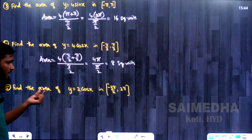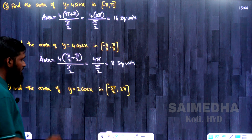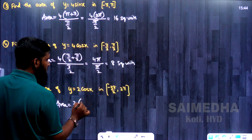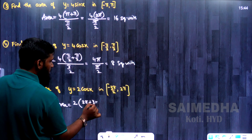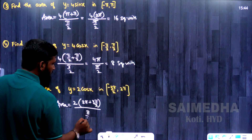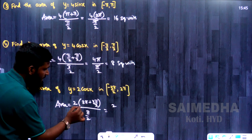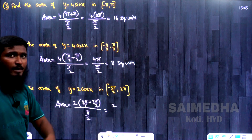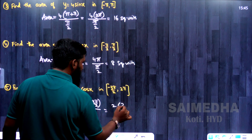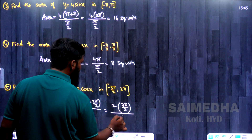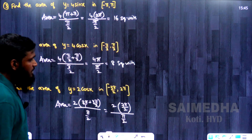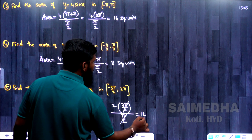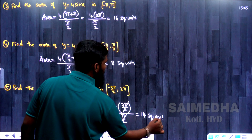One more: find the area of y = 2 cos x in [-3π/2, 2π]. Area = m × (b - a) / (π/2). Here m = 2, b = 2π, a = -3π/2, so b - a = 2π + 3π/2. Taking LCM 2: (4π + 3π)/2 = 7π/2. Area = 2 × (7π/2) / (π/2). The π/2 cancels: 2 × 7 = 14 square units.